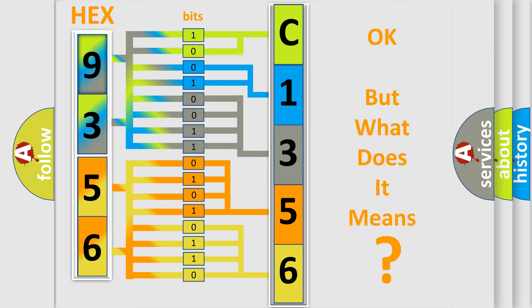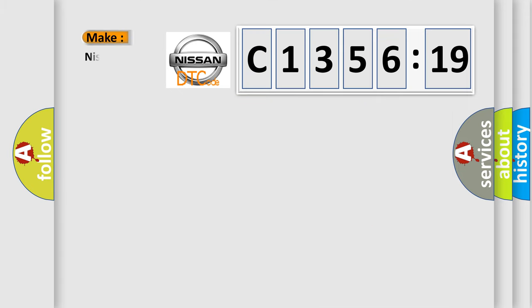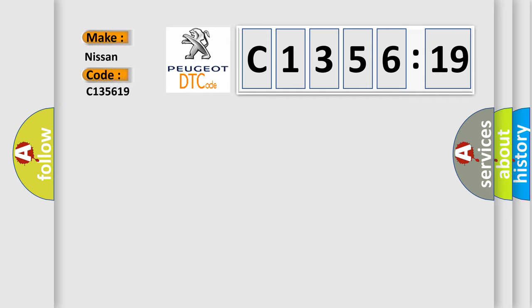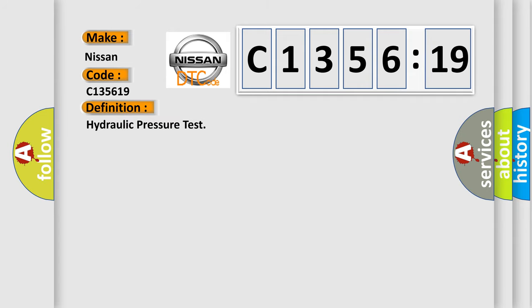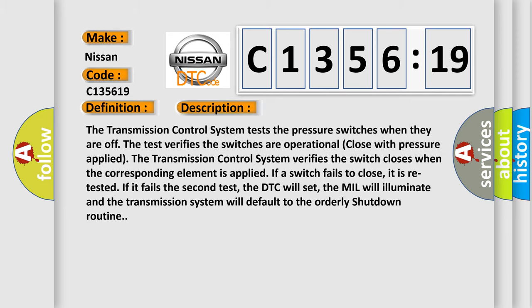The number itself does not make sense to us if we cannot assign information about what it actually expresses. So, what does the diagnostic trouble code C-135619 interpret specifically for Nissan car manufacturers? The basic definition is hydraulic pressure test.